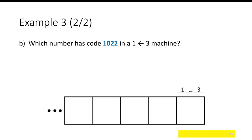What number has code 1022 in it? So if I have two dots here, two dots here, and one dot here, well, the far right, that's two dots.